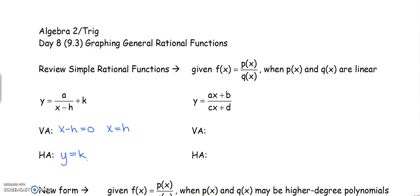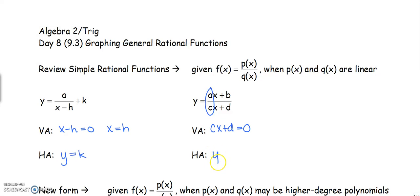The other simple rational function we've talked about is when we have a linear equation on top and a linear equation on the bottom. Same thing for the vertical asymptote — we set the bottom equal to 0, so cx plus d equals 0, and then solve for x. This time the horizontal asymptote is a little different when we get the same degree top and bottom. We divide the leading coefficients, so that becomes a over c.